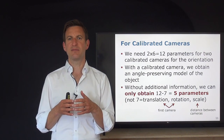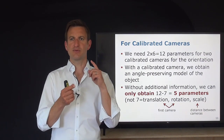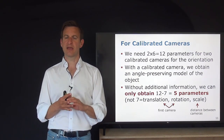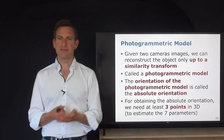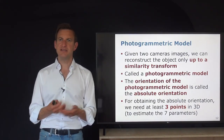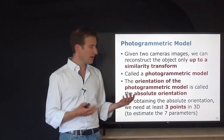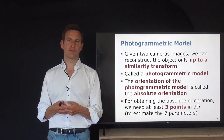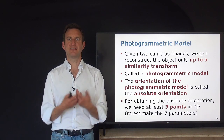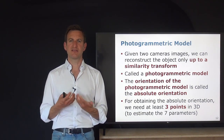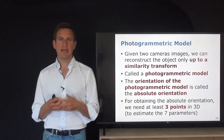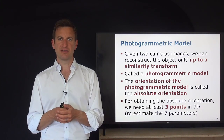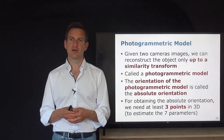With a calibrated camera, we obtain an angle-preserving model of the object. The five estimable parameters yield what we call a photogrammetric model — a 3D model of the scene known only up to a similarity transform. We are missing the global rotation, translation, and scale. If we want to place the photogrammetric model into the real world — fixing the similarity transform — that is called computing the absolute orientation.